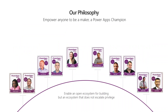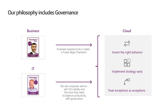The philosophy behind building Power Platform is to enable an open ecosystem for building, but an ecosystem that does not escalate privilege. It's still founded on least privilege — being able to do what they need to do to change their organization and improve their workflows, but only enough that they actually need. Governance is about incentivizing the right behavior, implementing a strategy early so people can follow and adhere to it. Exceptions will happen, and the platform caters for those on an as-needs basis, giving just enough privilege to do what that business solution needs to do.